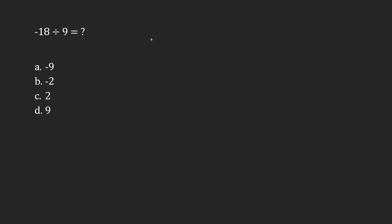Here we have negative 18 divided by a positive 9. Because it's mixed, I get a negative result. Anytime I'm dealing with mixed quantities with division or multiplication, my result will be negative. If I had a positive divided by a positive, or a negative divided by a negative, those would give a positive result.